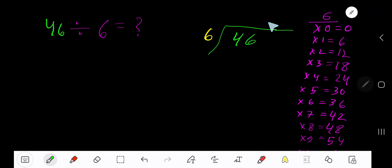46 divided by 6. Here 6 is the divisor, so we need the multiplication table of 6. 6 times 0 is 0, 6 times 1 is 6, 6 times 2 is 12, 6 times 3 is 18, 6 times 4 is 24.